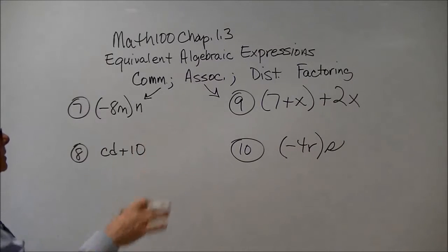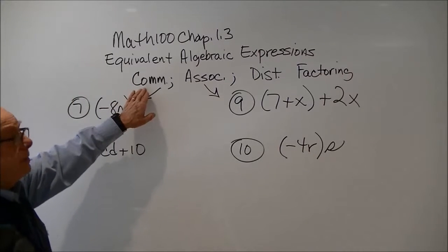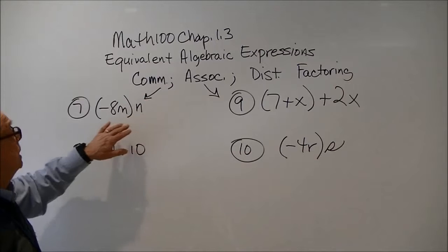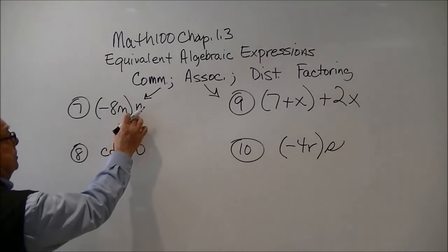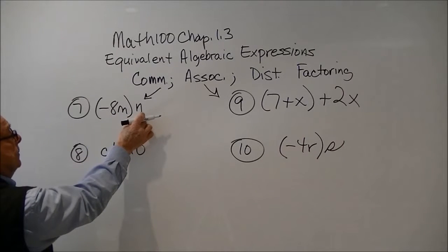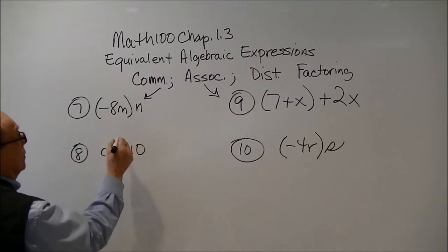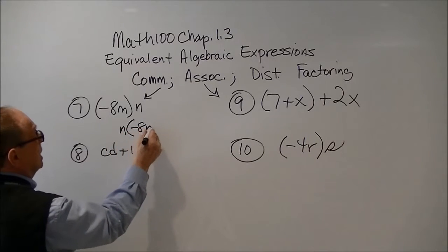Okay, as we go on to some of the other examples, we see in seven and eight, they're asking us to illustrate the commutative principle starting off with this. So basically, commutative, we're going to switch things around. This is one factor, this is another factor. So it would be n times negative 8m.